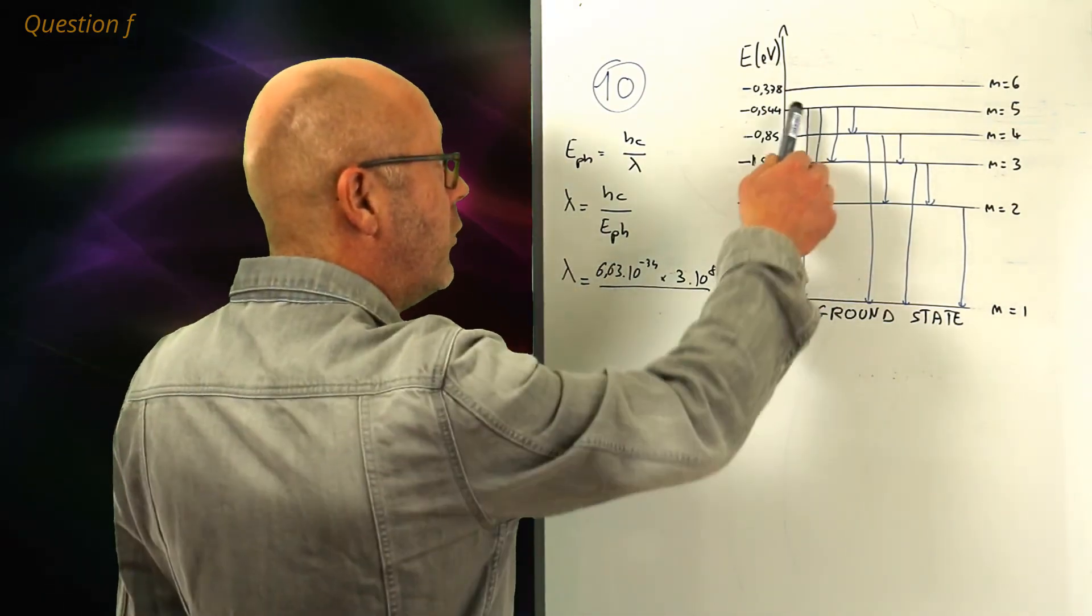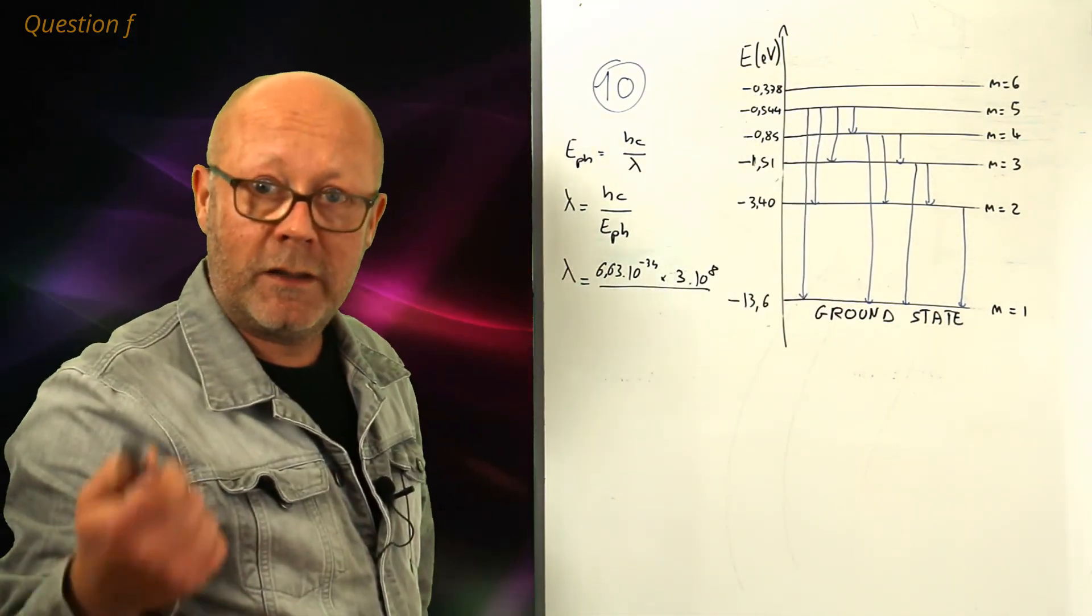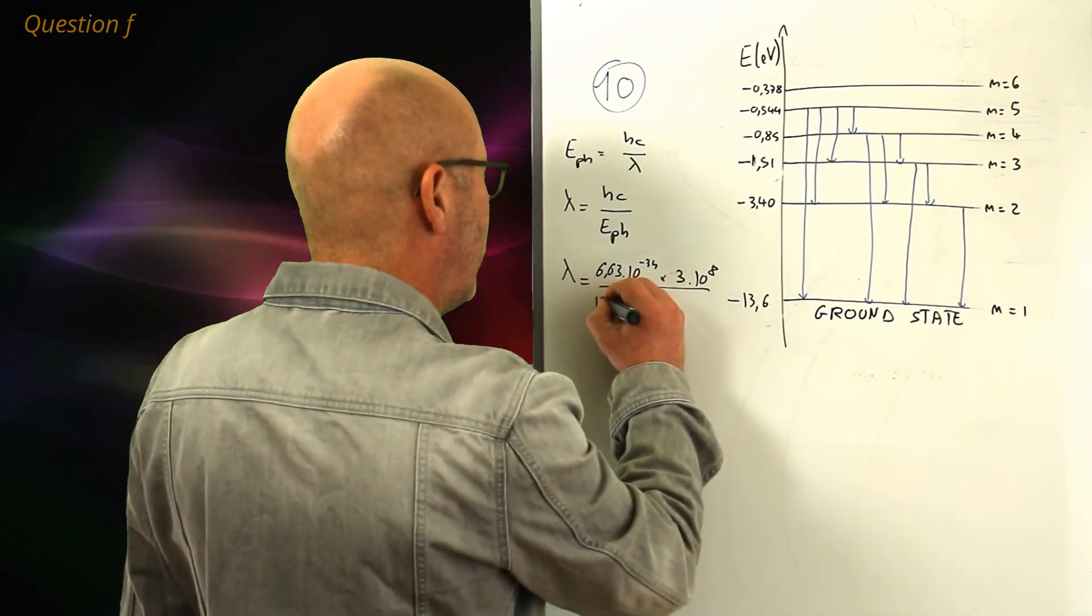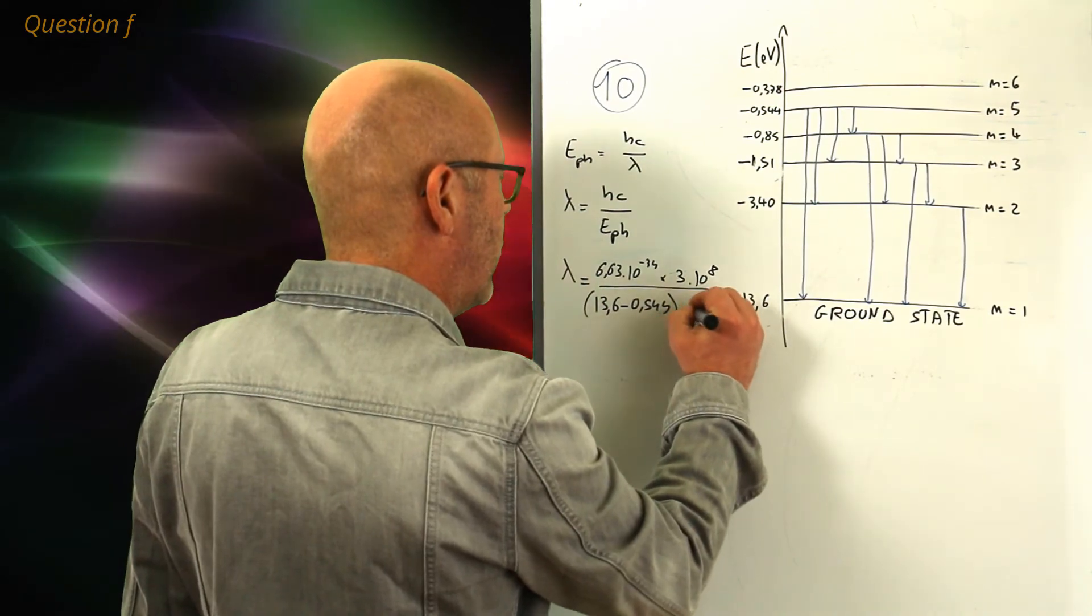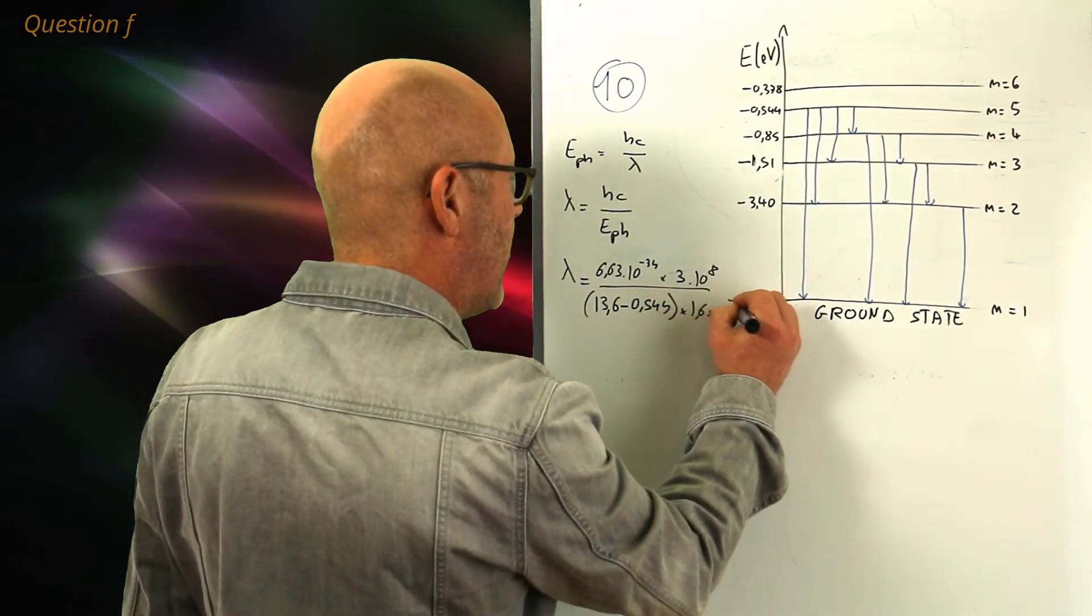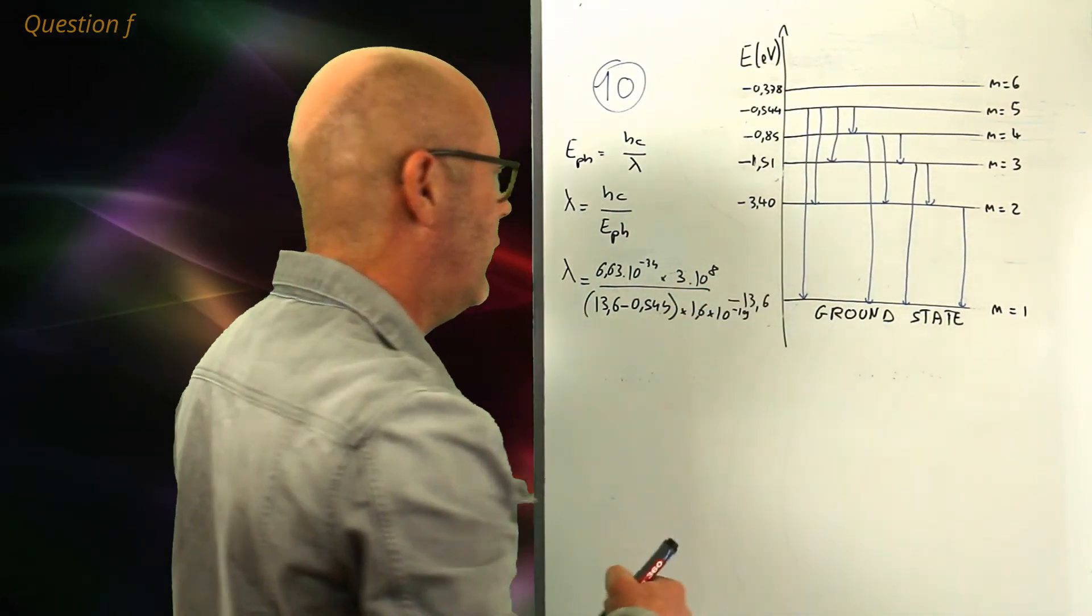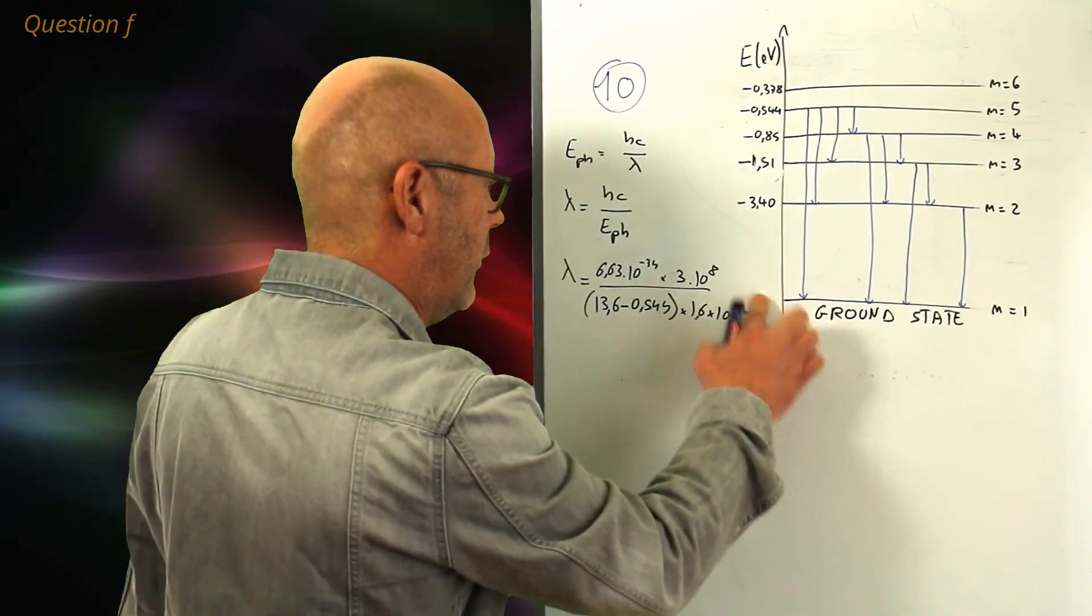The difference of energy between the levels corresponding to the energy of the photon. 13.6 minus 0.544. And let's remember to put this in joules, and multiply it by 1.6 to 10 to the minus 19.